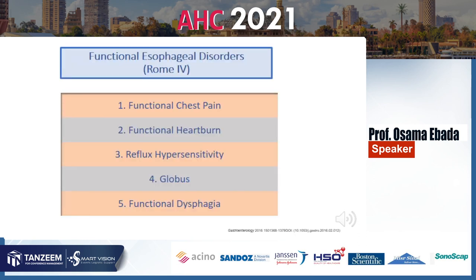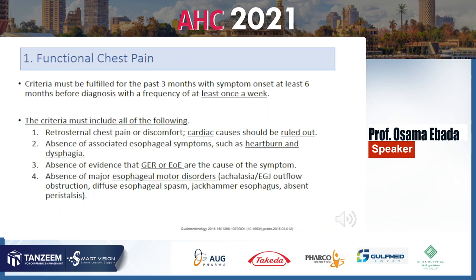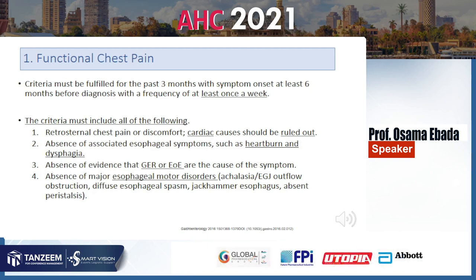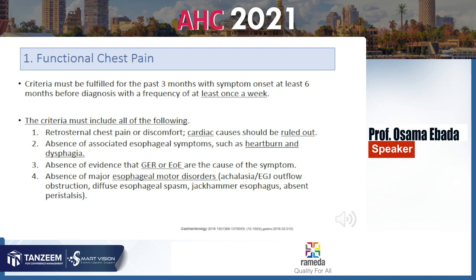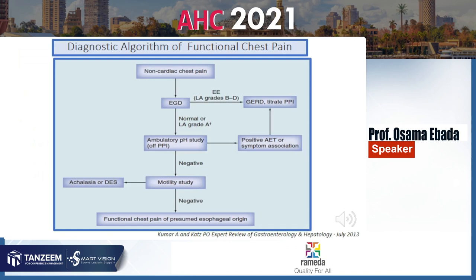Returning to functional esophageal disorders — there are five: functional chest pain, functional heartburn, reflux hypersensitivity, globus, and functional dysphagia. Functional chest pain must be present for the past three months, having started six months earlier, occurring at least once weekly. Cardiac causes must be excluded, as well as heartburn and dysphagia. Eosinophilic esophagitis is ruled out by endoscopy, GERD by pH or impedance, and major motor disorders by motility testing.